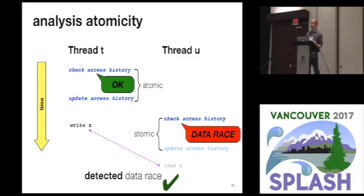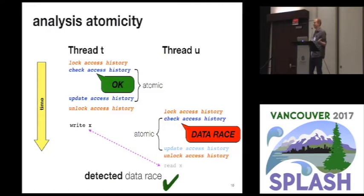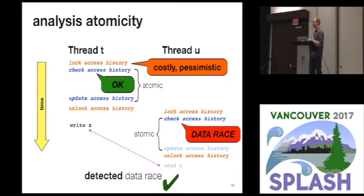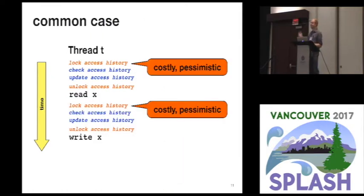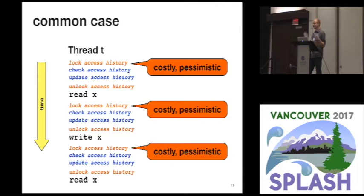Obviously what we need is some notion of what I'll call analysis atomicity — namely, that check and that update need to be atomic with each other, so we're checking and updating the history atomically. There's a simple way to do this: just put a lock around every access history. Obviously this comes with fairly obvious costs both in terms of time and space. It's really pessimistic, especially in the common case, because most of the time multithreaded programs are doing thread-local accesses or read-shared accesses, where we really should not suffer any contention on the analysis metadata. In those cases, all this blanket cost of synchronization everywhere is totally wasted.